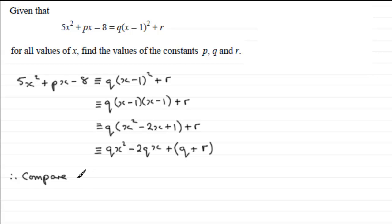So let's just write this down: therefore, compare coefficients. We've got compare coefficients of x² first of all. If we look at x², you can see that we've got 5x² here and qx², so we can see that q must be equal to 5. So that's our first value, so that was nice and quick.